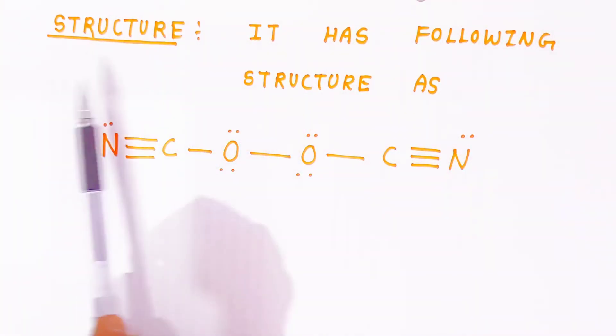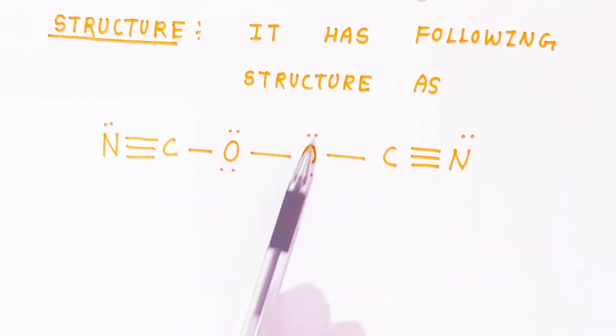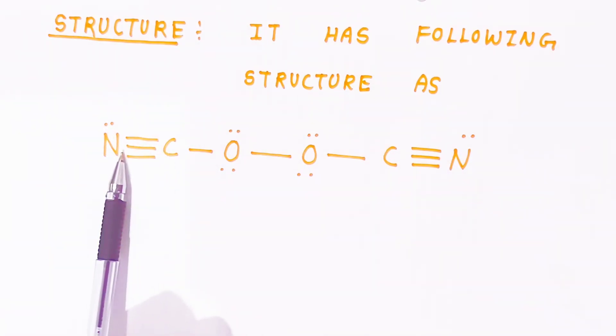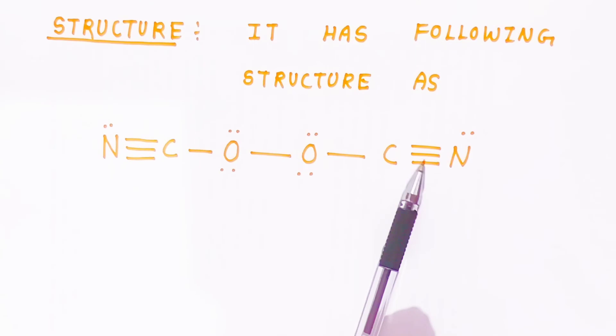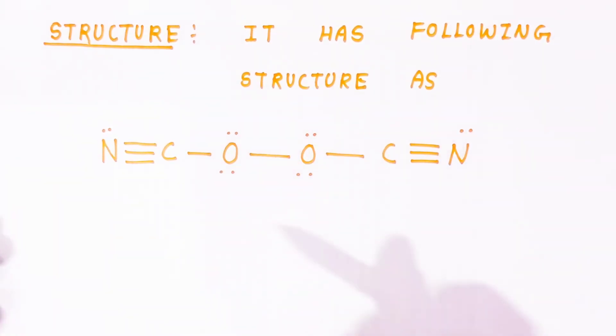Now when you see the structure, it has the following structure: N≡C-O-O-C≡N. Because of that, it has two lone pairs on oxygen, and nitrogen has one lone pair. Carbon and nitrogen are triple bonded. This is the structure of oxycyanogen.